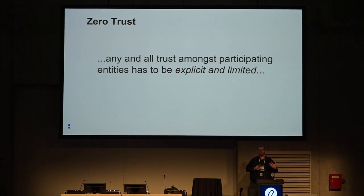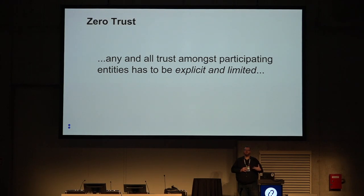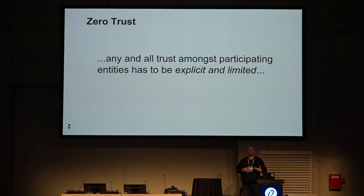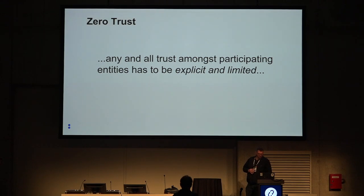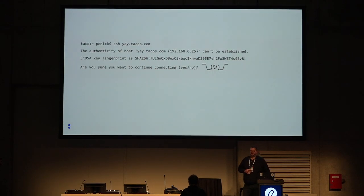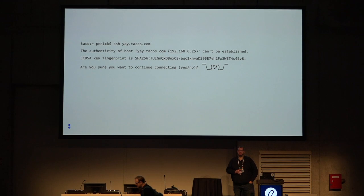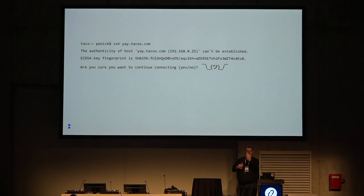So what is zero trust? Zero trust is a security concept where you do not implicitly trust anything within the boundaries of your infrastructure. Instead, everything — anything and everything — must be explicitly understood, permitted, and trusted. An example of implicit trust, something many of us see pretty much every single day, is SSH host key verification.